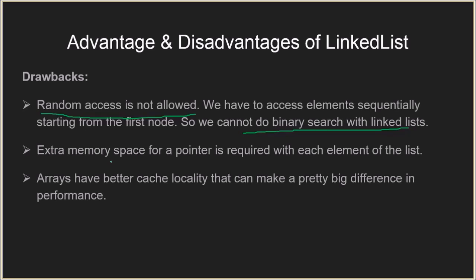Another drawback is that extra memory space is required for a pointer with each element. In a linked list, each node has a data part and a pointer to the next node, and that pointer represents extra space required per node. Finally, arrays have better cache locality because they use contiguous memory locations. This improves performance significantly. Linked lists have randomly scattered memory locations connected through pointers, so performance takes a hit because memory is accessed randomly rather than contiguously. That is all for this tutorial — thank you very much.